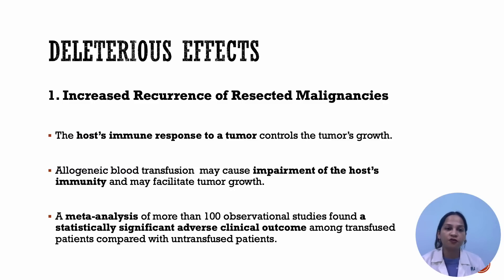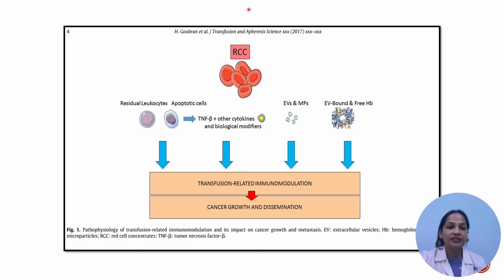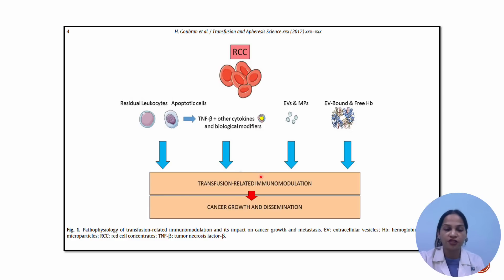Coming to the deleterious effects of TRIM. The first is increased recurrence of resected malignancies. The host immune response to a tumor controls tumor growth. When allogeneic blood transfusion leads to immunosuppression or impairment of host immunity, this results in tumor growth. A meta-analysis from more than 100 observational studies found a statistically significant clinical outcome among transfused patients. When there is allogeneic blood transfusion, along with red cells, there is transfusion of residual leukocytes or apoptotic cells, extracellular vesicles, microparticles, and free hemoglobin — all of which can lead to transfusion-related immunomodulation and immune suppression, resulting in cancer growth and dissemination.